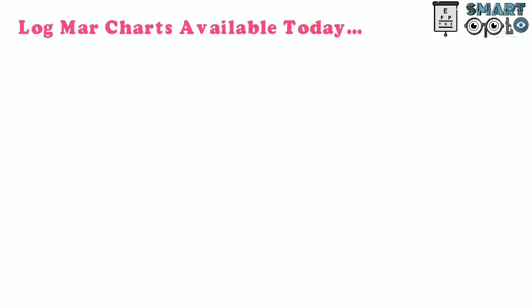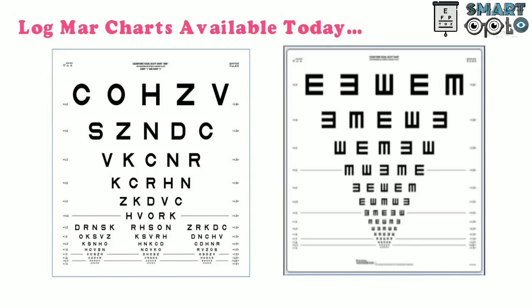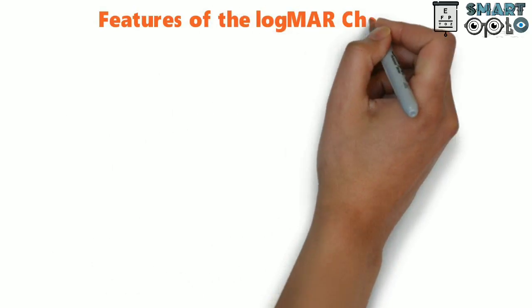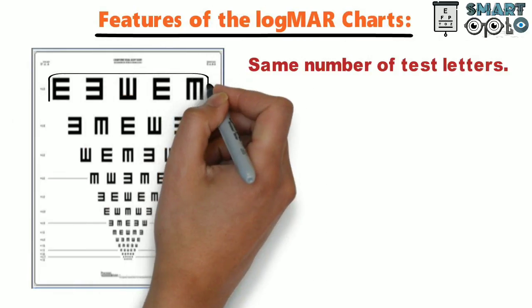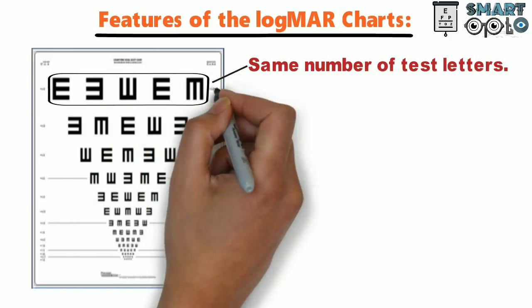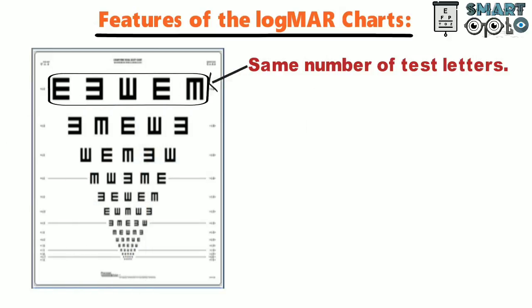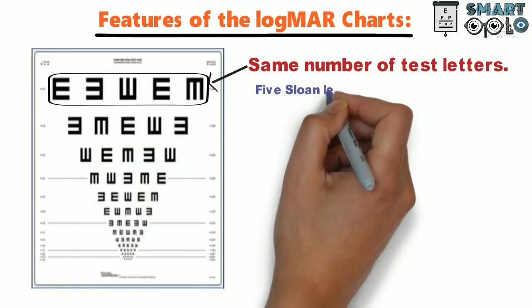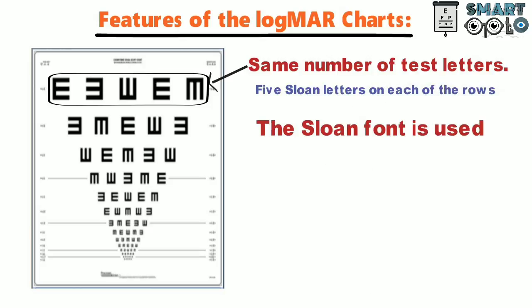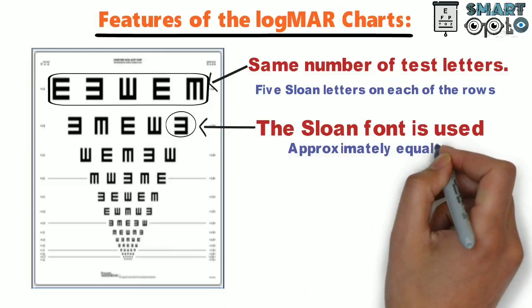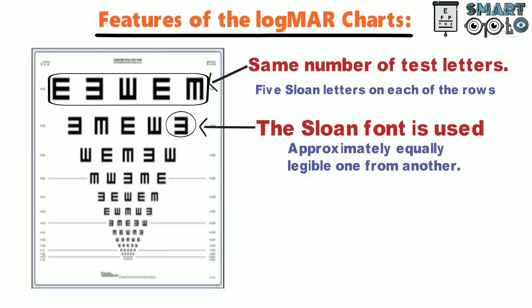These are some of the LogMAR charts available today. What are the features of the LogMAR charts? There are the same number of test letters on each row in the entire chart — five Sloan letters on each of the rows. The Sloan font is used for the letters, making them approximately equally legible one from another.